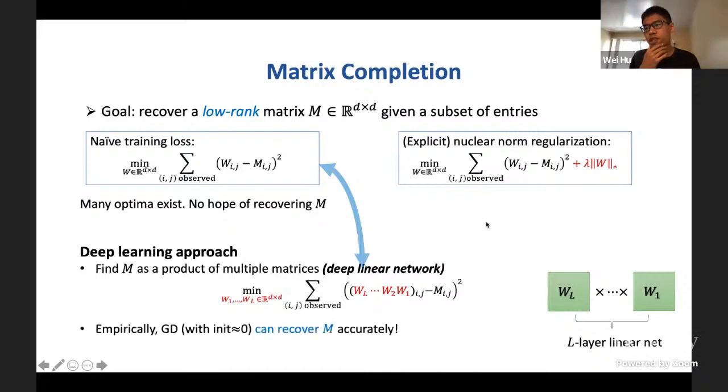But the surprise is that empirically, if we just minimize this new objective using gradient descent with initialization close to zero, we can almost always recover the ground truth matrix M accurately. And this is surprising because we are not explicitly asking for a low-rank solution in the objective. So the only possibility is that the optimization algorithm we use, which is gradient descent in this case, has an implicit regularization that somehow can help us find the low-rank ground truth matrix.